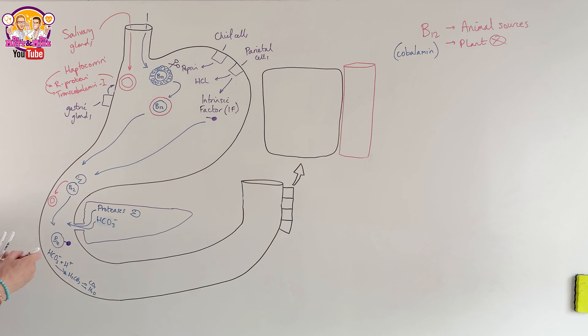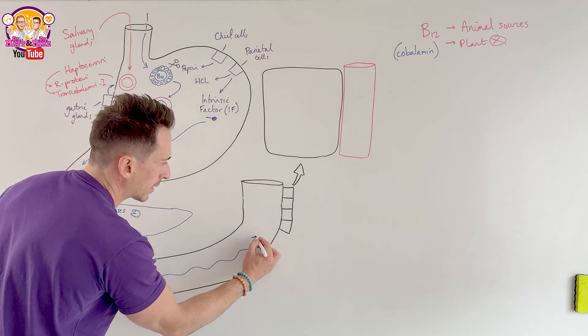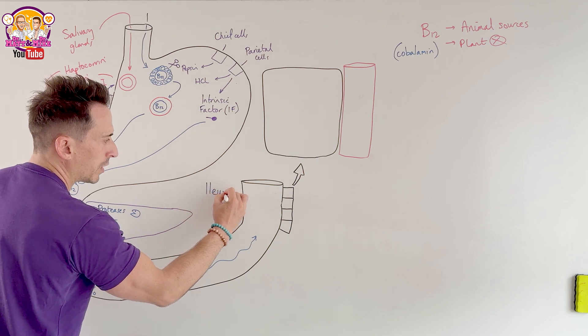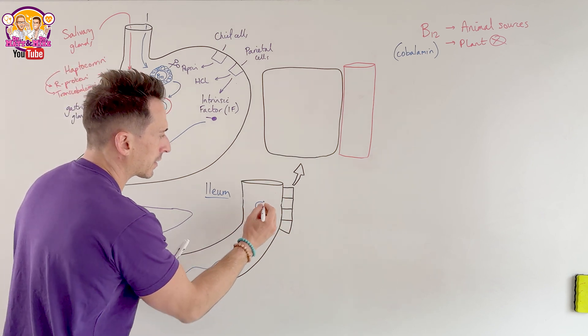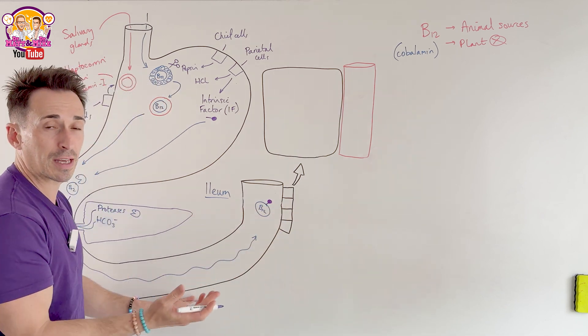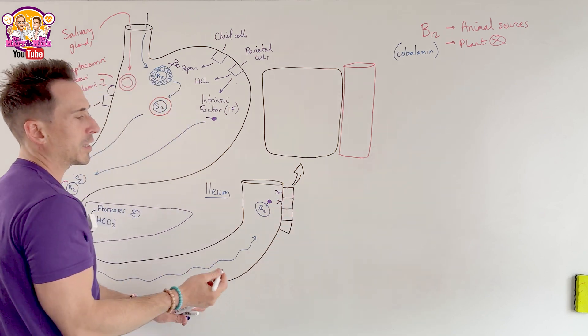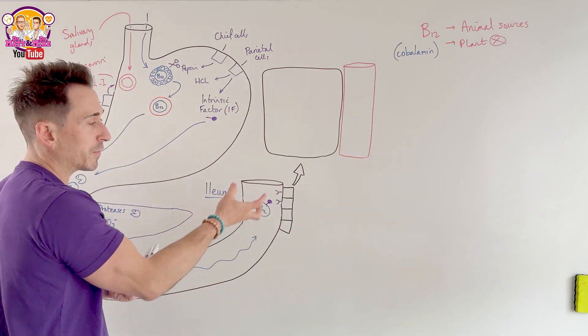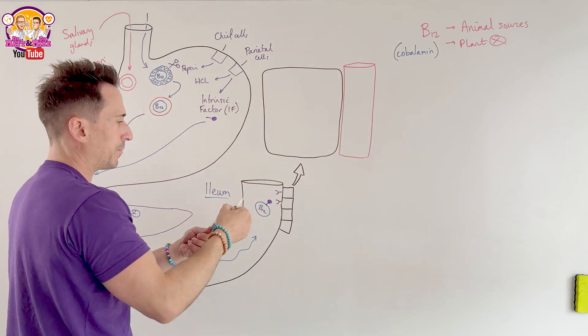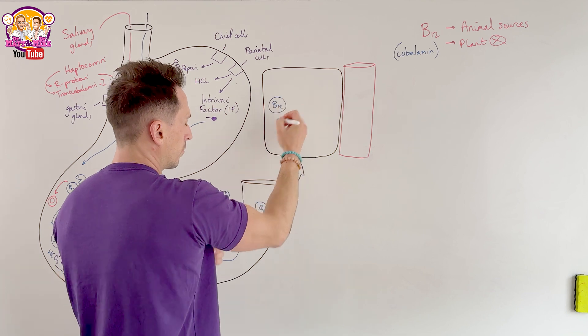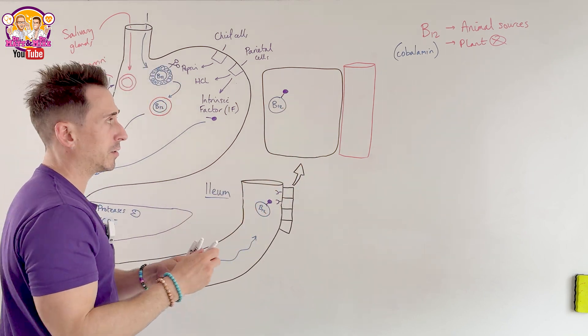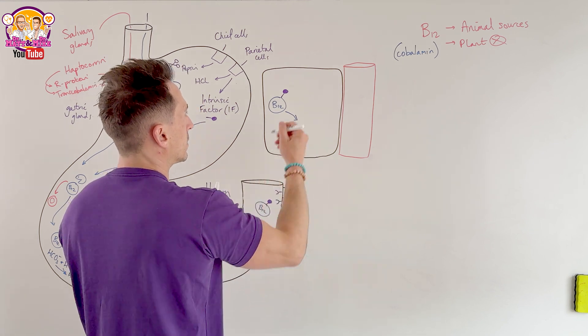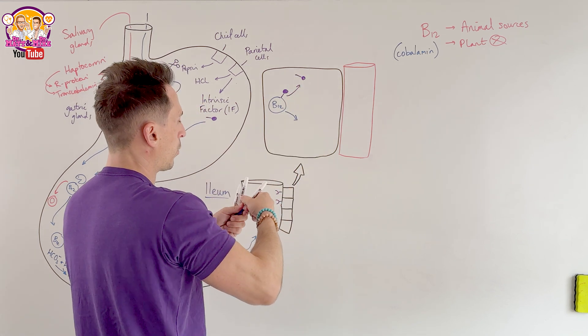All right. Now we've got B12 bound to that beautiful intrinsic factor that always wanted to bind to it. It then travels through our digestive tract, our small intestines, until it gets to the most distal portion of our small intestines called the ileum. Here we have ileal cells. Here's our B12. And here is our intrinsic factor. And these ileal, epithelial or mucosal cells, they have receptors for intrinsic factor. So the intrinsic factor will bind to the receptors and that results in the process of endocytosis, sucking it in to the mucosal cell. So now inside the cell we have B12 with the intrinsic factor. Now through a process that has not been well elucidated, we don't really know what's going on, the B12 and the intrinsic factor part ways.